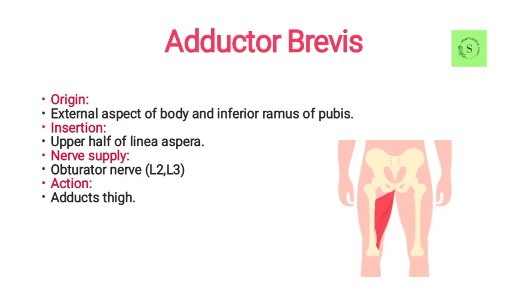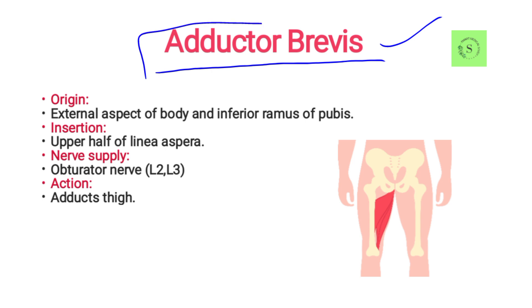In this lecture, the muscle I will discuss is the adductor brevis. Adductor brevis is also part of the adductor group of muscles, along with adductor longus and adductor magnus. This is the last one in the group, which is adductor brevis.